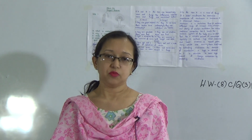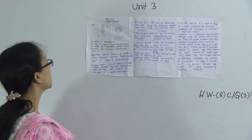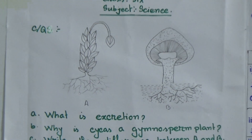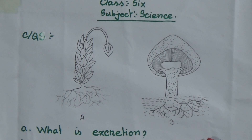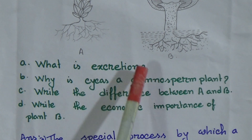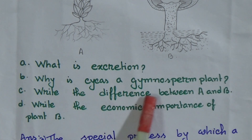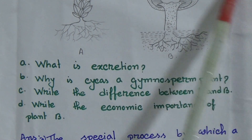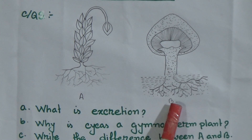Our today's class is creative question number 3 from chapter 2. Let's read the question. In the question there are two pictures: number A and number B. Here is the picture of a tree and also there is a picture of a plant. Question A: what is excretion? Question B: why is Cycas a gymnosperm plant? Question C: write the difference between A and B. Question D: write the economic importance of plant B. In this figure, figure number A is a moss and figure number B is fungi.